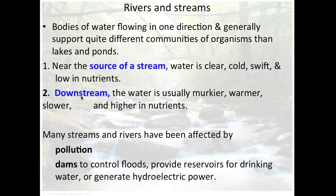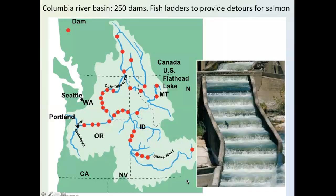Rivers and streams have been affected by pollution from runoff, and large rivers have had dams built to control floods, provide drinking reservoirs, or generate hydroelectric power. The Columbia River in Washington is an example — every red dot on the map is a dam, showing how much humans have disrupted the river. Because salmon swim upstream to spawn, fish ladders had to be built next to the dams so the salmon can still make their way upstream.